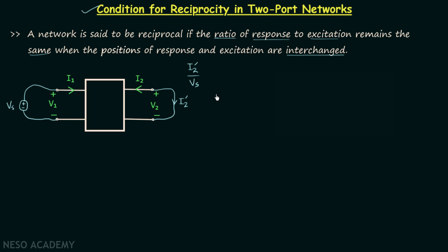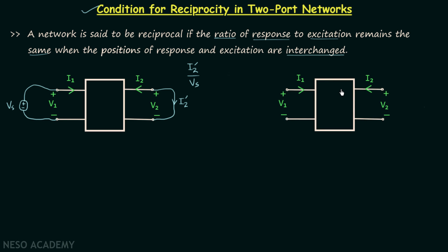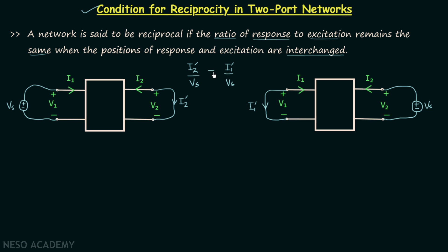Now we will interchange the positions of response and excitation while having the same two-port network. This time I will connect the voltage source providing voltage Vs between the two terminals of port number two, and I will short circuit port number one. Current I1' will be our response and Vs is the excitation, therefore ratio of response to excitation will be I1' over Vs in case number two. For this two-port network to be reciprocal, I2' over Vs should be equal to I1' over Vs. This is the condition for reciprocity in two-port networks.